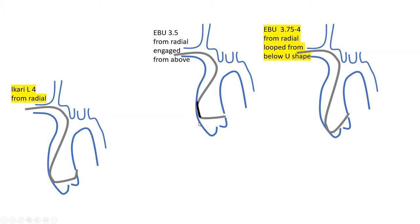This power position is not necessary with an EBU/CLS system. Engaging from above gives you good support — it is a more sturdy and robust catheter. That's why I usually start with a smaller arm with an EBU/CLS system than with an ICARI-LEFT.